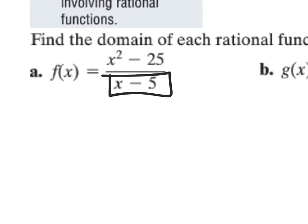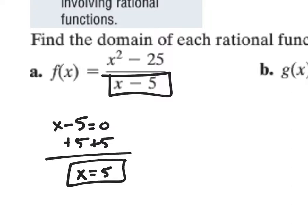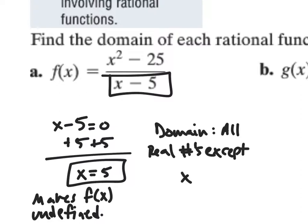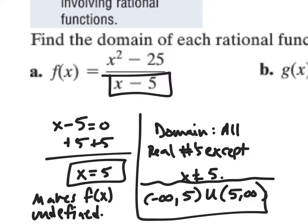So let's take a look at this first one. I'm going to take x minus five, set that equal to zero, and solve for x. If I add five to both sides, I get x is equal to five. Now this value makes f(x) undefined, and because it makes it undefined, we restrict it from our domain. So we can say the domain is all real numbers except x cannot equal five, or in interval notation: negative infinity to five, union five to infinity.